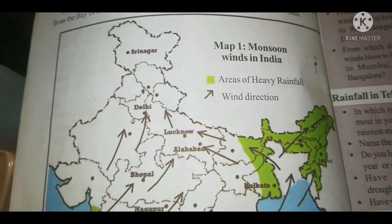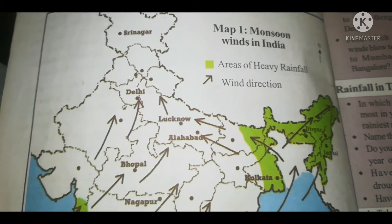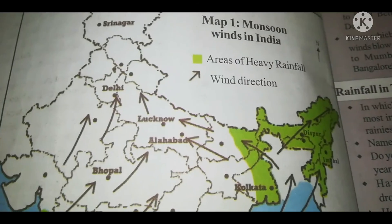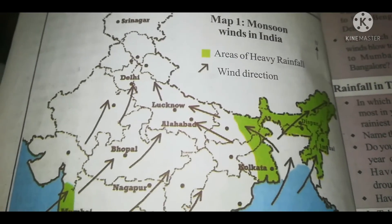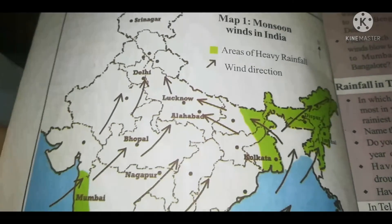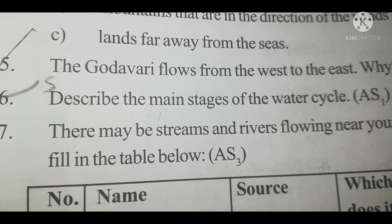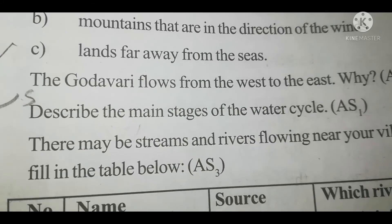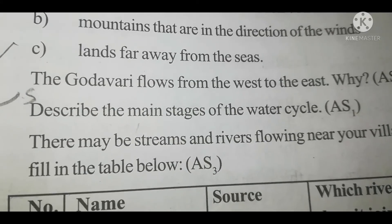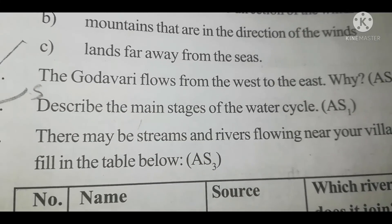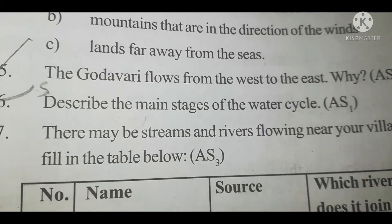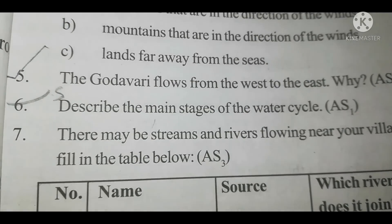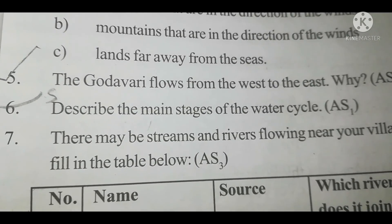So students, the map maker uses different colors and different symbols for us to understand better. Today's homework is: you have to write and describe the main stages of the water cycle. Write the answer of this question neatly and submit in the group. Hope you will understand.